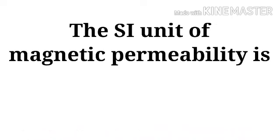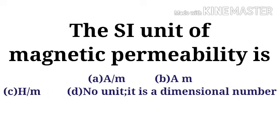The SI unit of magnetic permeability is - and the options are: Angstrom per meter, Ampere meter, no unit, it is a dimensional number.